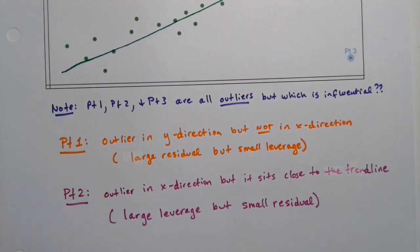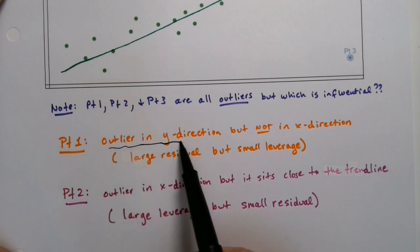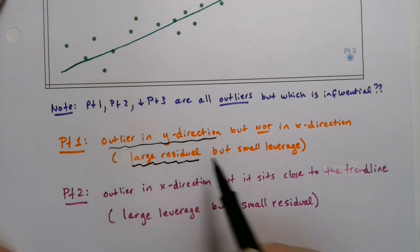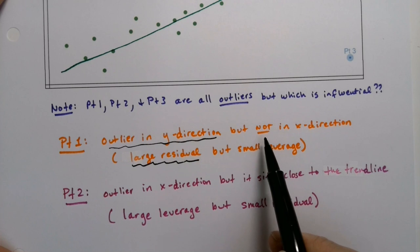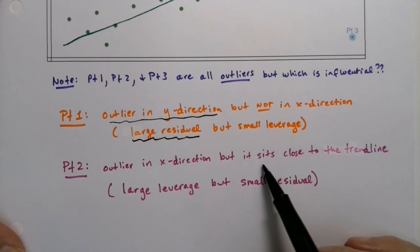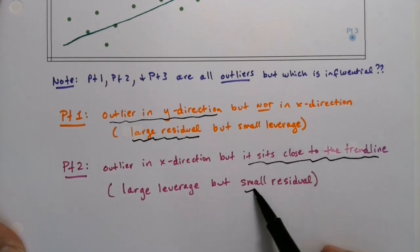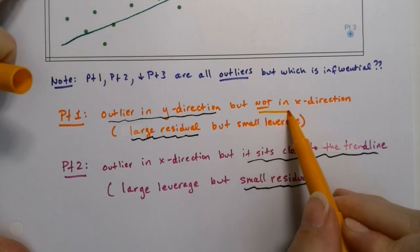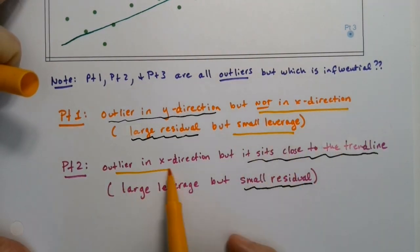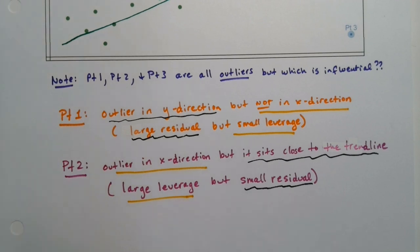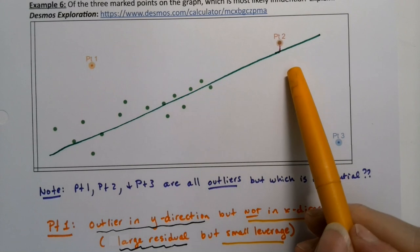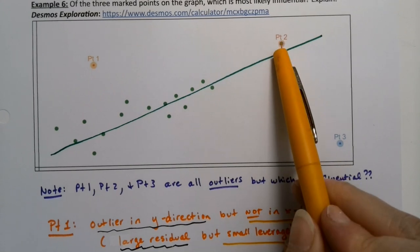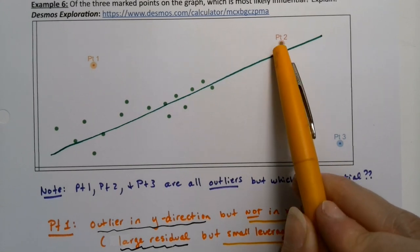Just to be clear: an outlier in the y direction is where the large residual comes from, and sitting close to the trend line is why point two has a small residual. Not being far in the x direction is why point one has small leverage, while point two, being far out in the x direction, has high leverage but a really small residual.